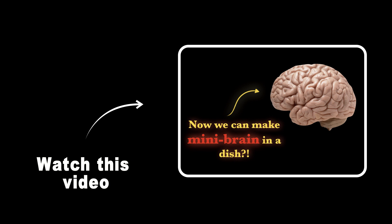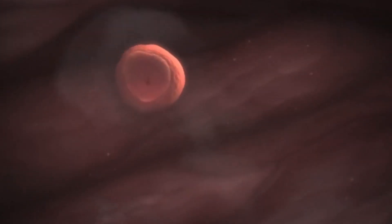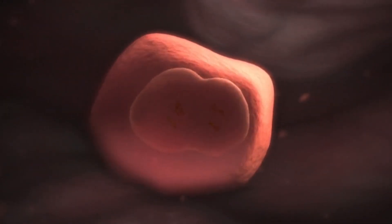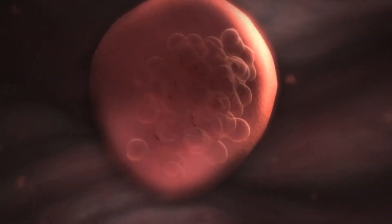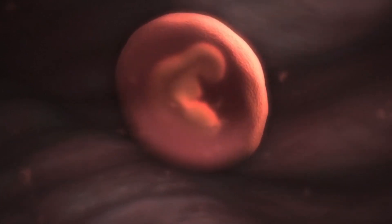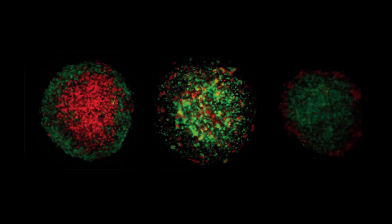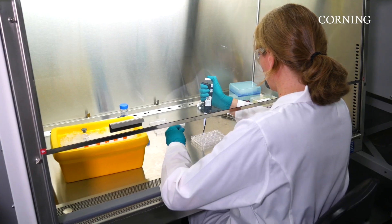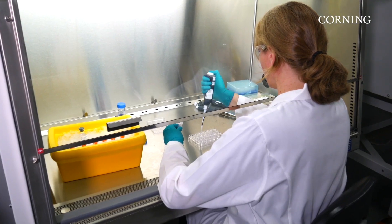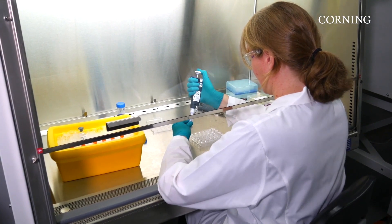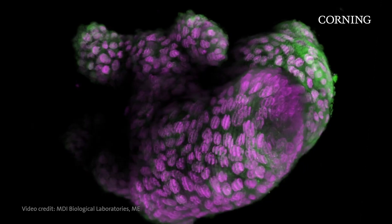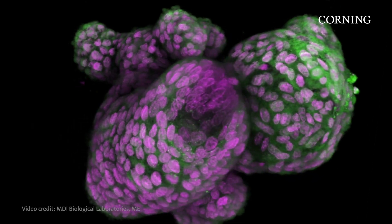In order to create an organoid, we must first study the complex process by which various organs in a human embryo develop from a single cell. By understanding how the cells differentiate and organize themselves during embryonic development, we can then attempt to recreate a similar nurturing environment in a lab setting, and guide stem cells down specific developmental pathways to form organoids.